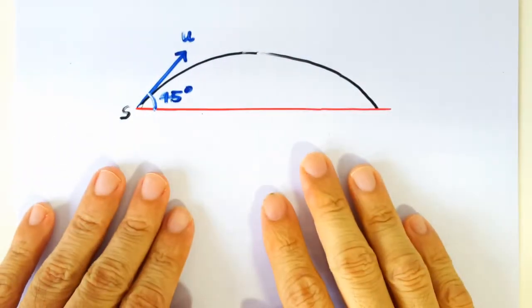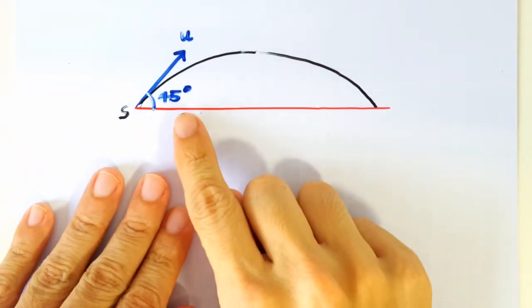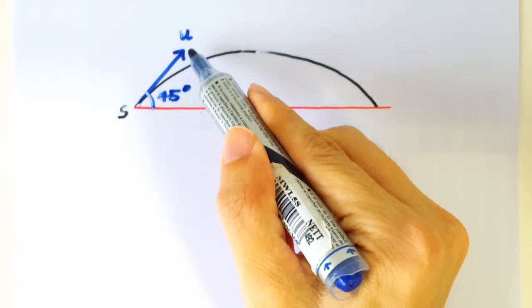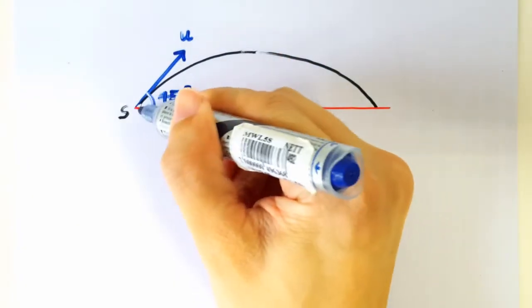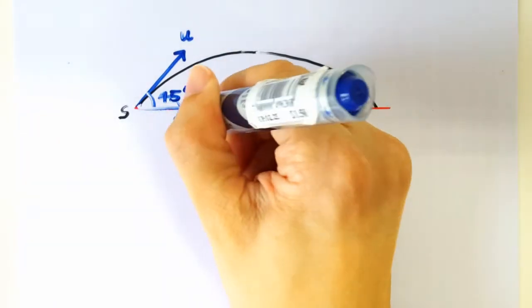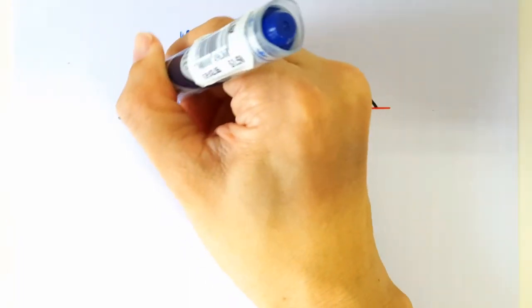So we have a projectile motion launched at an angle of 45 degrees. As usual, we can resolve the initial velocity into its horizontal and vertical components. We'll call it Ux and Uy.